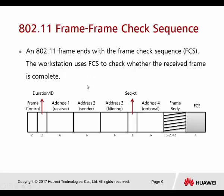The last field is the frame check sequence. An 802.11 frame ends with the FCS. The workstation uses the FCS to check whether the received frame is complete. This is how our station knows that a file has been fully downloaded — the FCS informs the STA that downloading is complete.